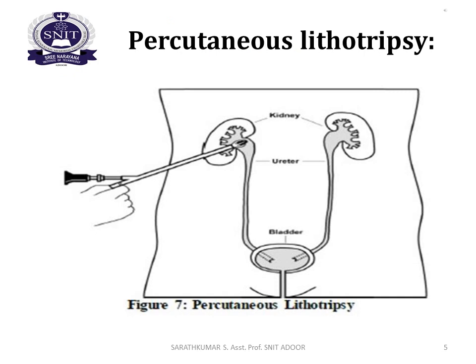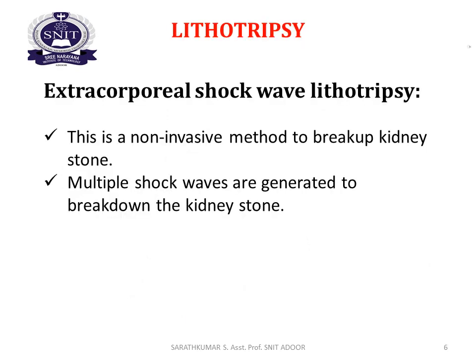In the percutaneous lithotripsy method, as shown in the diagram, the tip reaches the kidney stone to deliver a wave. The transducer wave targets the kidney stone and breaks it into smaller pieces.